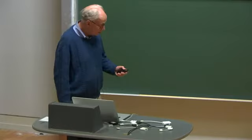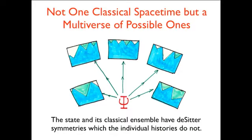The theory predicts, with that potential, not one classical spacetime, but a multiverse of possible ones, with bubbles in different places, different kinds of bubbles. These are supposed to be yellow, yellow, green, and so forth. The state, these are complicated. The state has de Sitter symmetries, but the individual histories do not. That's important for making predictions.